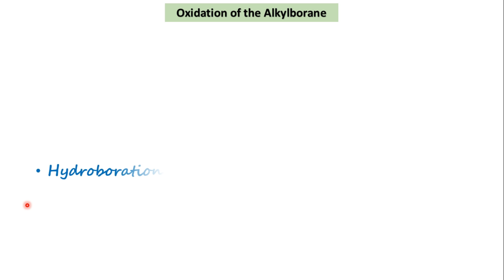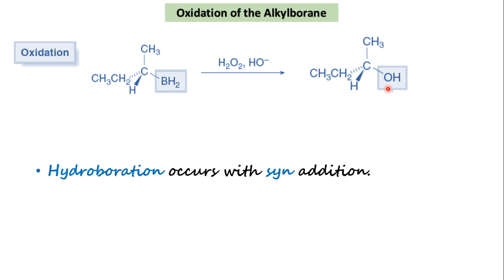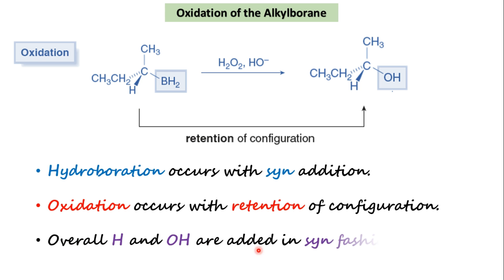Alkylboranes are not isolated because they react rapidly with water and spontaneously burn when exposed to air. Therefore they are oxidized with basic hydrogen peroxide. Oxidation replaces the C-B bond with a C-O bond, forming a new OH group with retention of configuration — that is, the OH group replaces the BH₂ group in the same position relative to the other groups on carbon. Overall, H and OH are added in syn fashion and in anti-Markovnikov orientation.